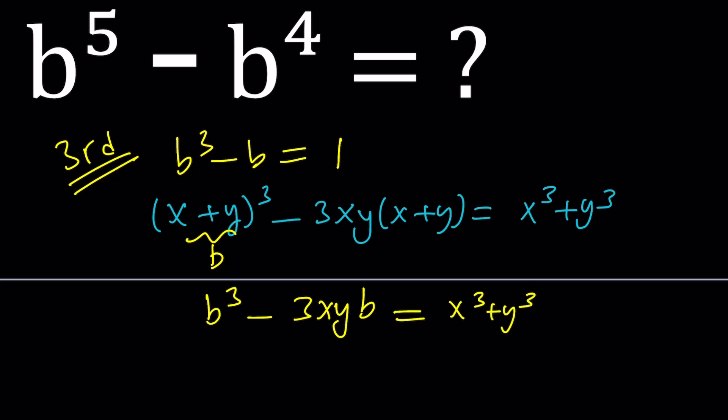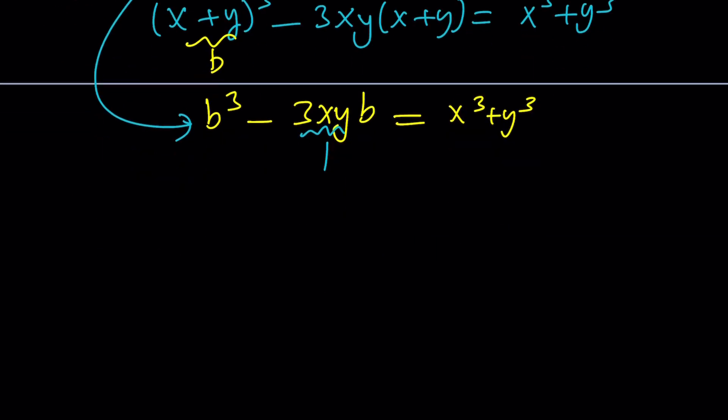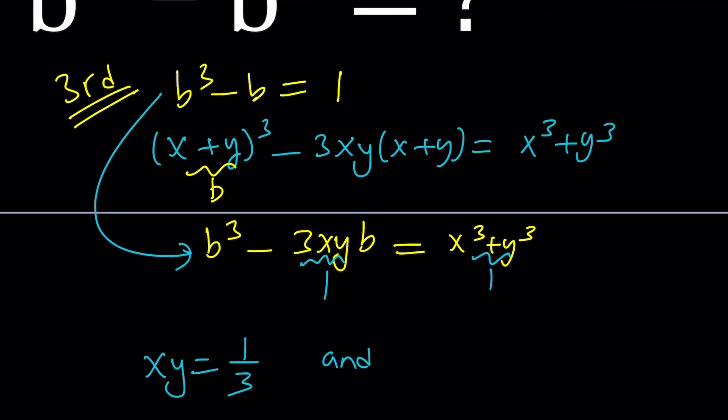And if you compare that to our equation, you're going to realize that for those b values, the coefficient of b is negative 1 or negative 3xy, which means 3xy needs to equal 1, which means xy needs to equal 1 third. And from the constant, x cubed plus y cubed needs to equal 1.